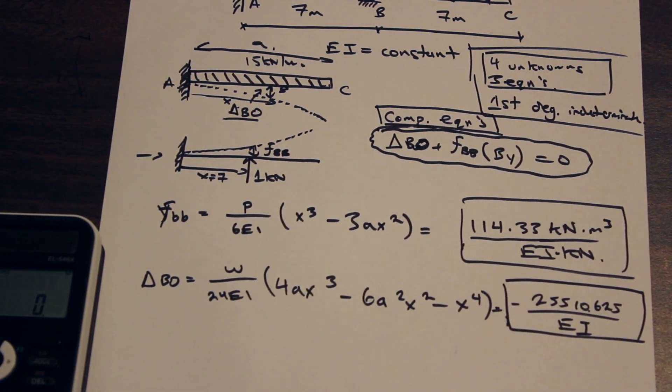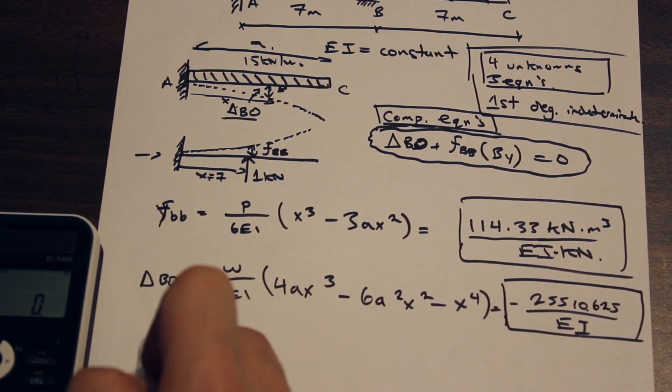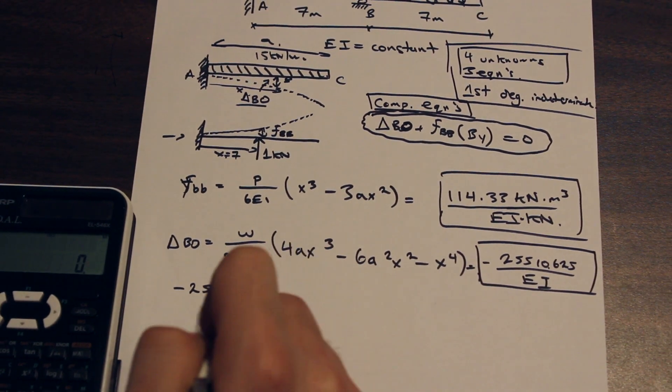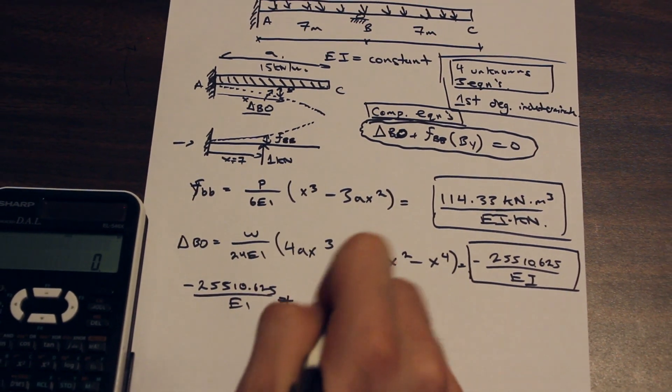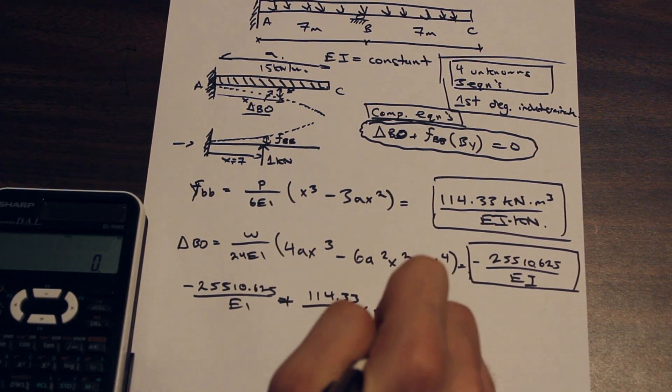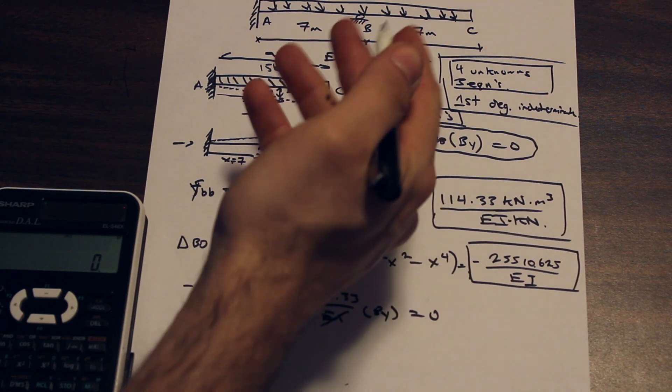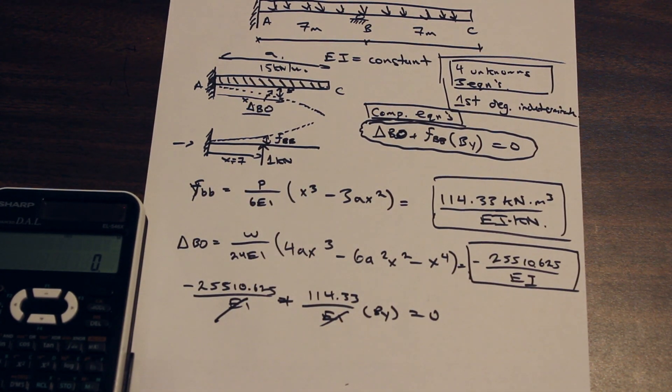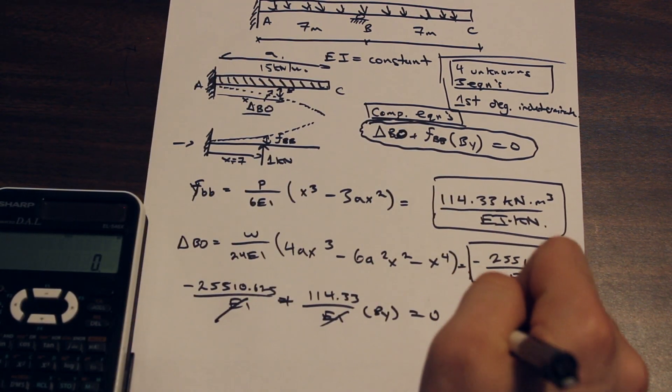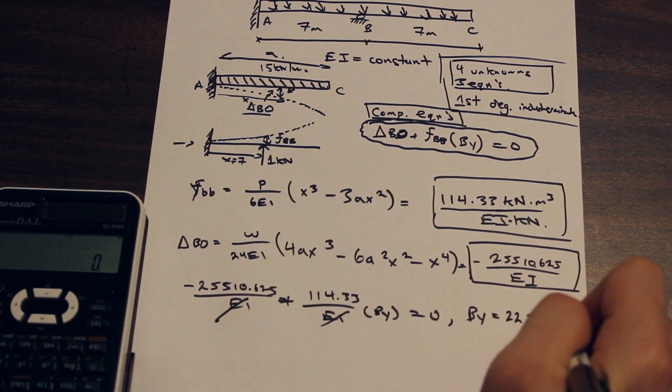So what we really have to do is plug these values into this equation and solve for BY. So we're going to be left with negative 25510.625 over EI plus, and FBB was 114.33 over EI times BY equals zero. As you can see right now, the EIs cancel, so there was no real point in having those numbers anyway. As long as the EI are constant, they're going to cancel. And if we just solve this really simple equation for BY, we are going to get that BY is equal to 223.1 kilonewton up. There we go.